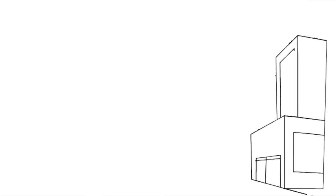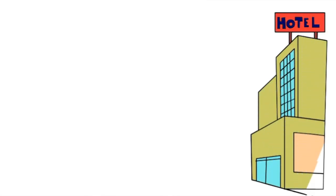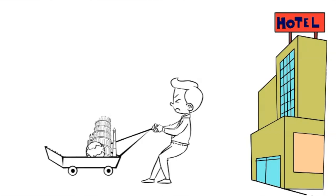Before I tell you about the different types of hotels, let's first establish what is a hotel. Well, to put it simply, a hotel is a building that provides accommodation for people. Hotels might also provide other things such as food and leisure facilities. Hotels are a short-term accommodation — normally for a night, a few nights, maybe a few weeks.